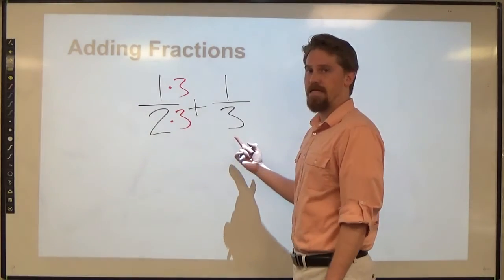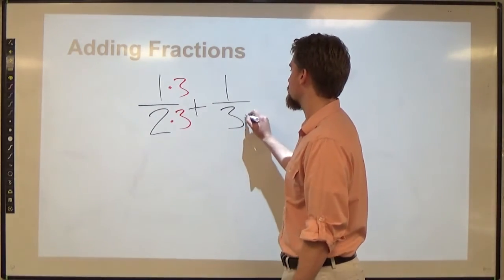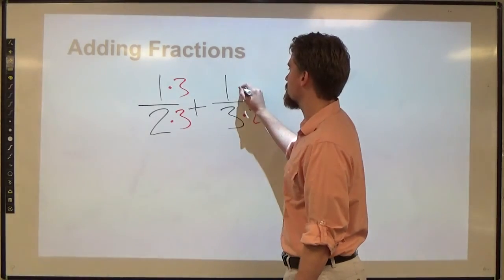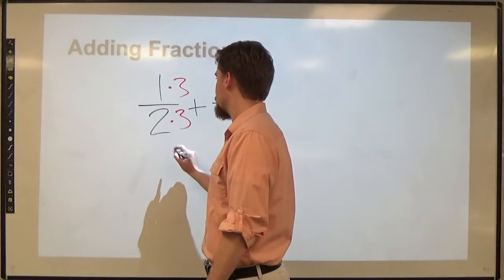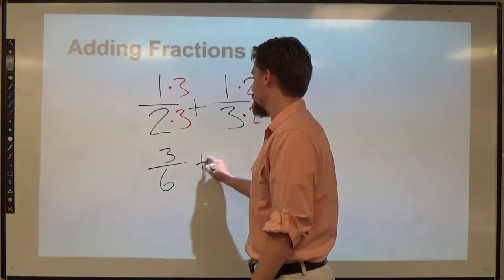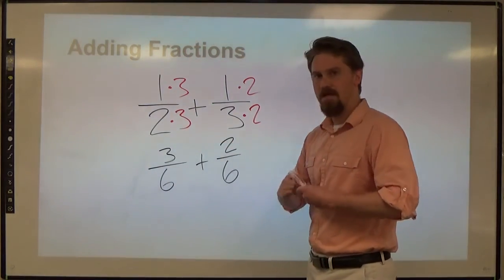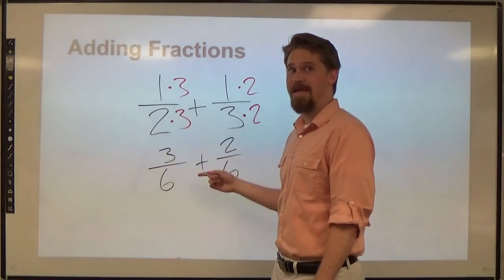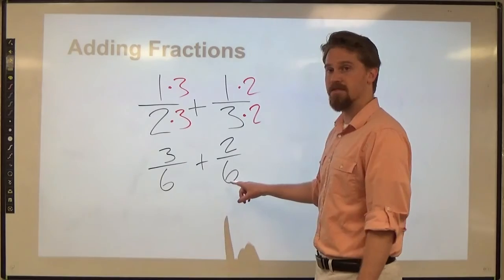This one is going to be something different because I need to multiply 3 times 2 to get up to 6, which means the top is going to be 2 over 6. So let me rewrite this now. We have 3 over 6 plus 2 over 6. Both of these are now using the same measurements of sixths. Now, this is 3 sixths, this is 2 sixths.